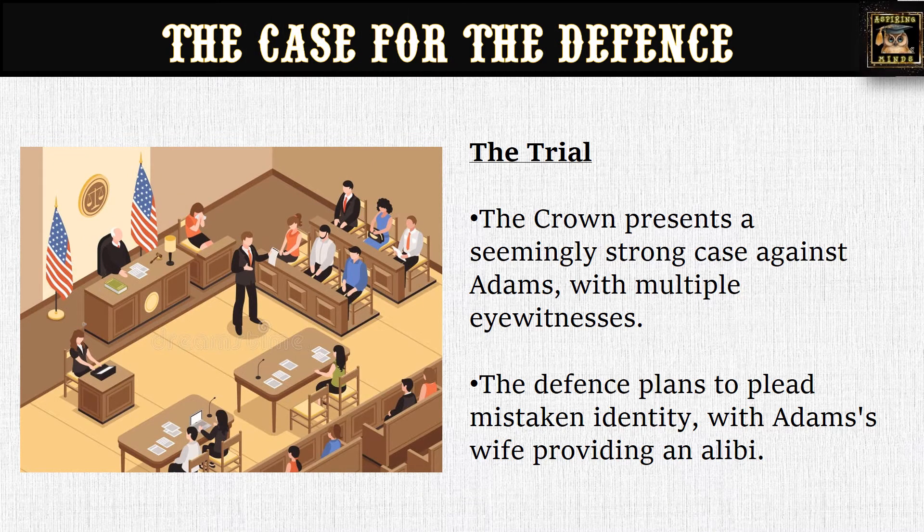Next, we see the trial taking place where the Crown presents a strong case against Adams with multiple eyewitnesses, all able to give accounts of how at different points in time they have seen Adams in that area. The defense plans to plead mistaken identity, with Adams' wife providing an alibi. They are going to prove that Adams has a twin brother and perhaps the witnesses have seen him — Adams is not the one guilty of committing the murder.